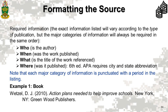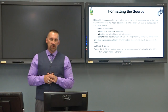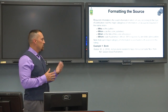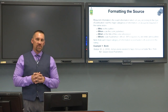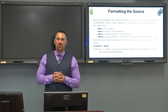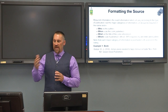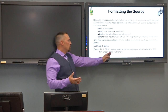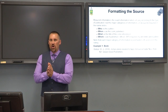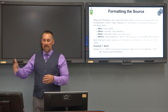The fourth piece of information is the where — the location where it was published. Who, when, what, and where: those are the four things you answer to list your sources. In this case, the book was published in New York, New York by Greenwood Publishers. You place the city, comma, the two-letter state abbreviation, colon, followed by the title of the publishing company. That piece of information ends with a period.